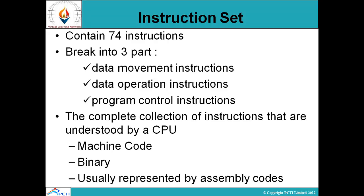The instruction set contains 74 instructions, broken into three parts: data movement instructions, data operation instructions, and program control instructions. The complete collection of instructions understood by a CPU is machine code in binary, and is usually represented by assembly codes.